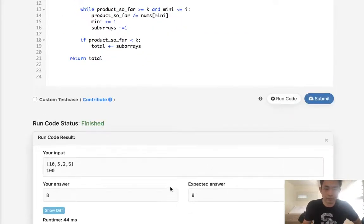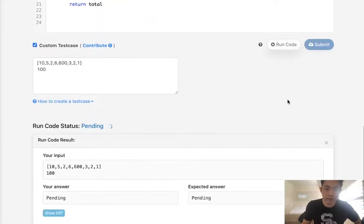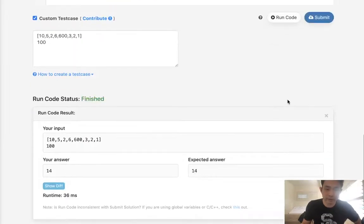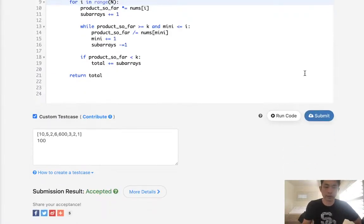Okay, so far it looks good. Let's try to test out like if we added something like 600, 321, just see if that made sense. Okay, it looks like it's working, so let's go ahead and submit that. And accepted.